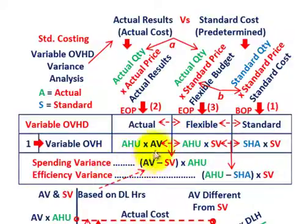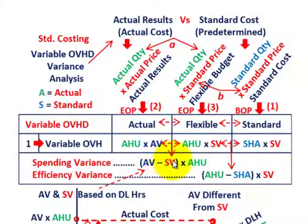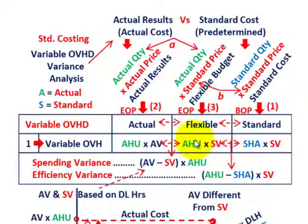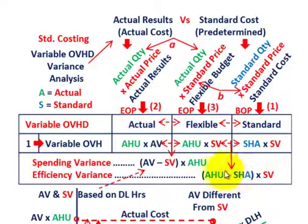Our spending variance is the difference between the actual variable rate and the standard variable rate on a per-unit basis, times the actual hours used. For our efficiency variance, that's the difference between our flexible and standard amounts. The common factor between those two is the standard variable rate, so the variance is between actual hours used and standard hours allowed — that difference times the standard variable rate is our efficiency variance.